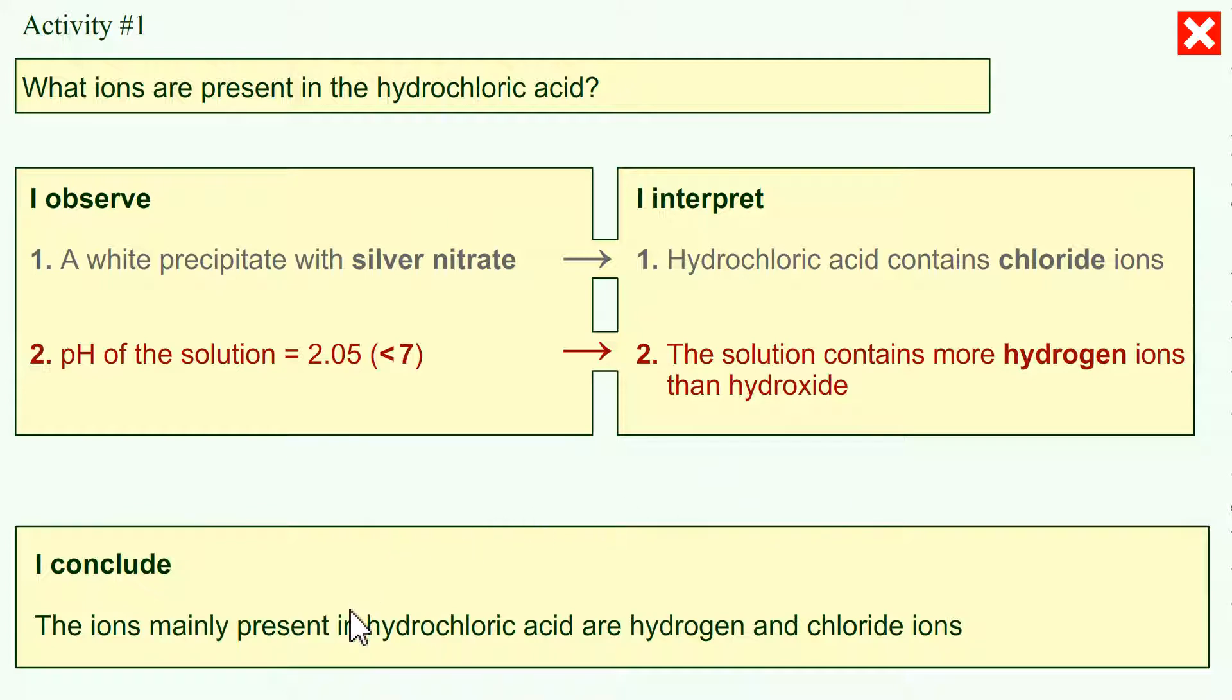The conclusion: the ions mainly present in hydrochloric acid are chloride ions and hydrogen ions.